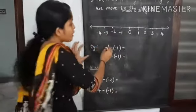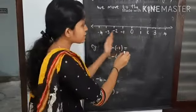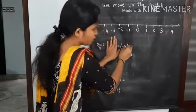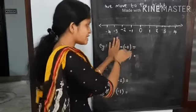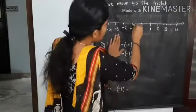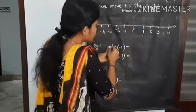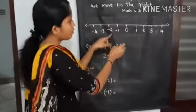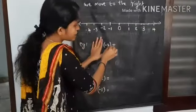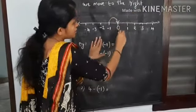Let's see with an example: minus 1 minus minus 1. Here I took minus 1, and I am going to subtract minus 1 from minus 1. From minus 1, I have to move one place to the right. The answer is 0.